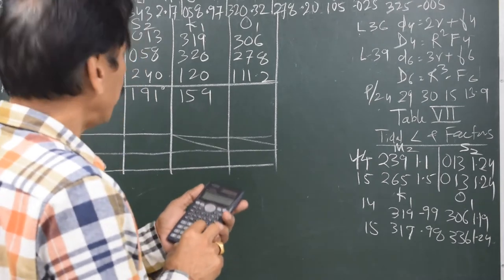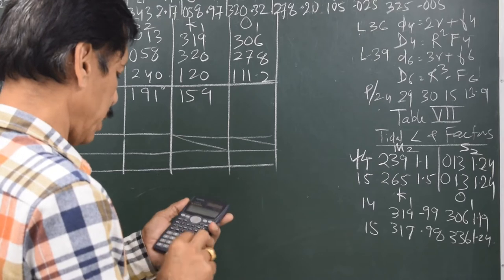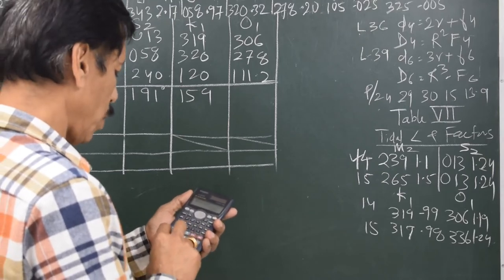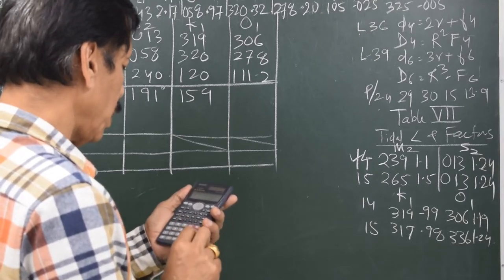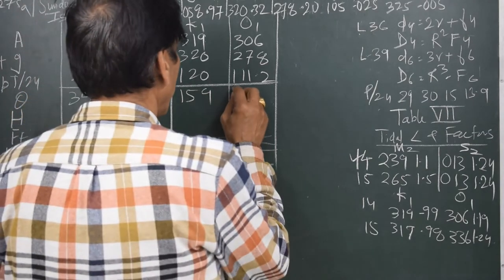Next one is 306 plus 278 minus 111.2. That gives me 470 minus 360, which gives me 112.8.